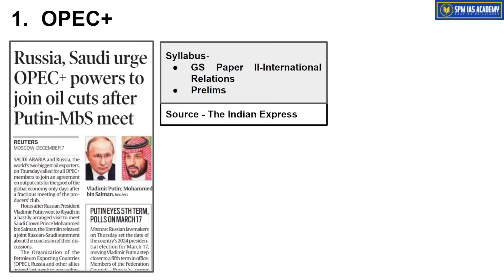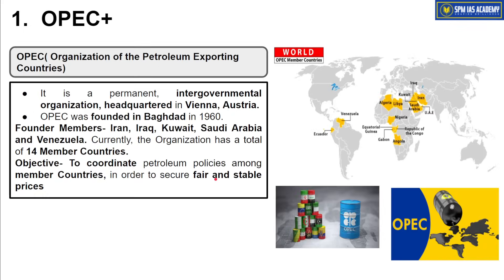The first article is about OPEC+, which is important from GS Paper 2 International Relations point of view. OPEC stands for Organization of the Petroleum Exporting Countries — the major petroleum producing and exporting countries. Its headquarters is in Vienna, Austria.